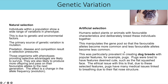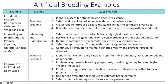Artificial selection is when humans select which plants or animals breed together, choosing what they deem to be favourable characteristics rather than natural selection pressures doing so. This manipulates the gene pool so that favourable alleles become more common and less favourable alleles become less common. An example is the selective breeding of dog breeds such as pugs, where humans selected for flat, squashed faces that were considered cute, but this has resulted in significant breathing difficulties due to their flat noses.